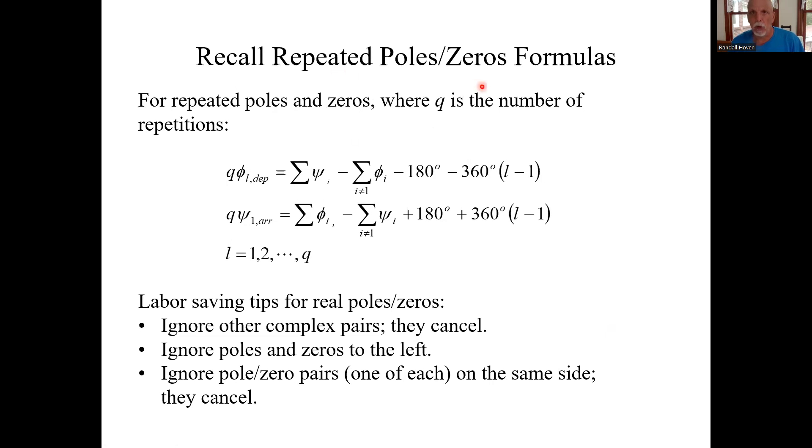This is primarily a repeated pole problem. Here's the formulas from the formula sheet. And in our case, the repeated is a pole that's repeated. So we're going to need this formula especially. Remember some labor-saving tips for departure angles. You could ignore complex pairs if you're talking about real poles or real zeros. Ignore complex pairs.